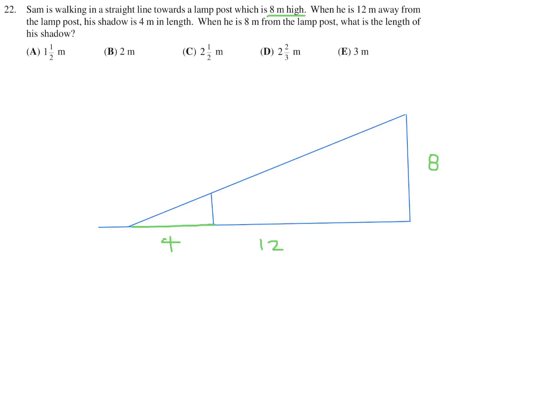So now what they want you to figure out is when he's only 8 meters from the lamppost, it's the same person, so it's the same height, what is his shadow? So they basically want you to figure out what would be his shadow. Now I just want to draw a straight line to indicate that he is always going to be the same height. This line that I drew is him. So we'll call him having h as a height.